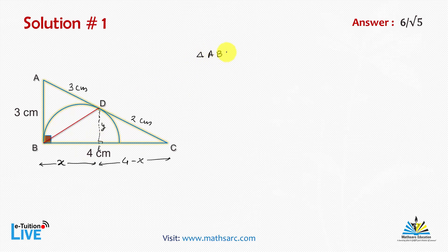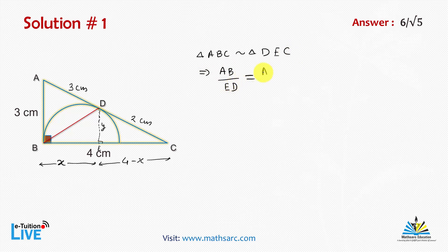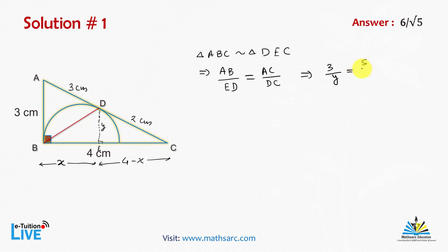By the proportionality theorem, triangle ABC is similar to triangle DEC. This implies AB upon ED is equal to AC upon DC. AB length is 3 cm, ED length is Y cm, AC is 5 cm, and DC is 2 cm.